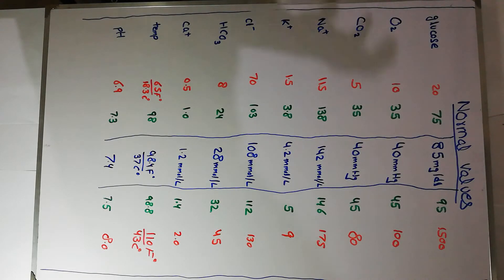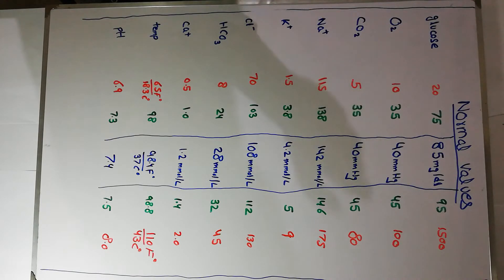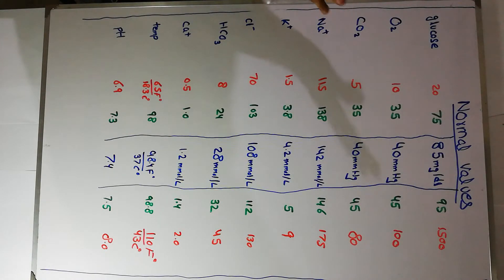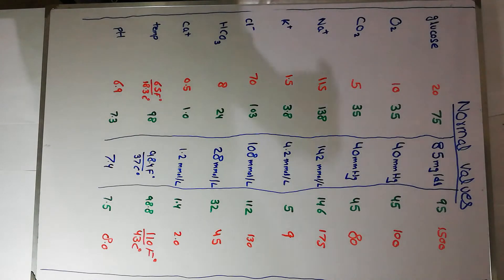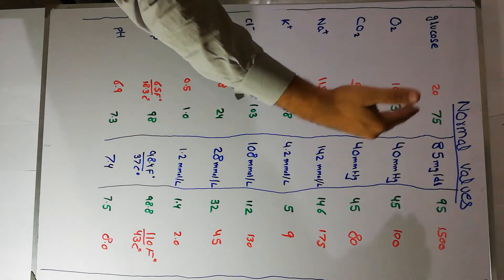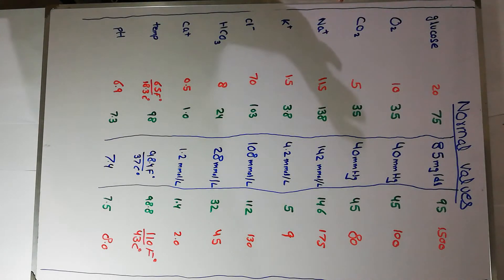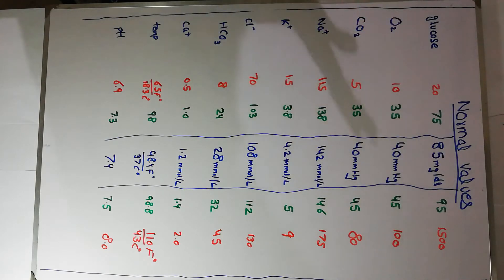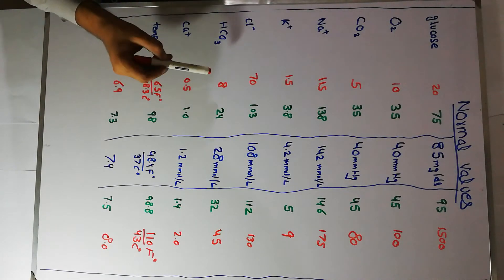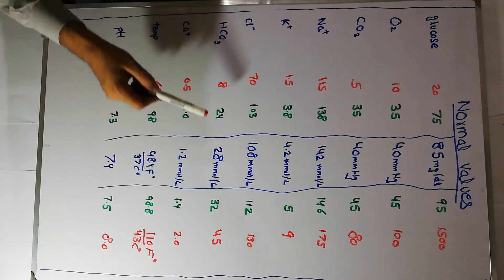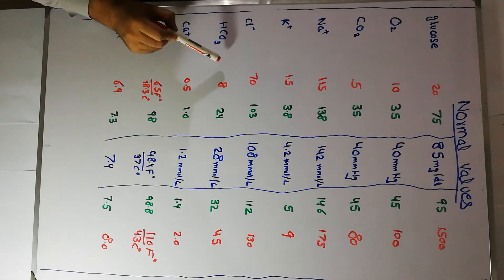If the concentration of a particular nutrient increases very rapidly, it will have more consequences compared to a slow change — though this rule doesn't apply universally. For example, if hyperglycemia develops slowly and gradually, the patient may not notice immediately, but when blood glucose suddenly decreases, signs and symptoms appear within minutes.